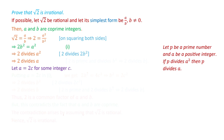If we substitute a equals 2c into equation 1, what we obtain is: the left-hand side is 2b squared, and in place of a squared on the right-hand side, we write 2c squared, which gives us 4c squared. This implies that b squared equals 2 times c squared.